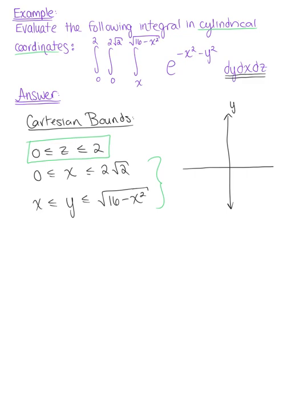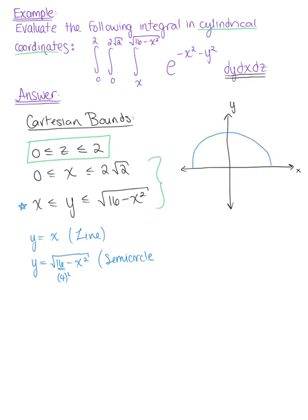Here is our y-axis and x-axis. Looking at the bounds for y, we have y equals x, and y equals the square root of 16 minus x squared. We recognize that y equals x is just the diagonal line, and y equals the square root of 16 minus x squared is a semicircle with a radius of 4. Here's our semicircle with a radius of 4, and then we also have the diagonal line — this is y equals x.